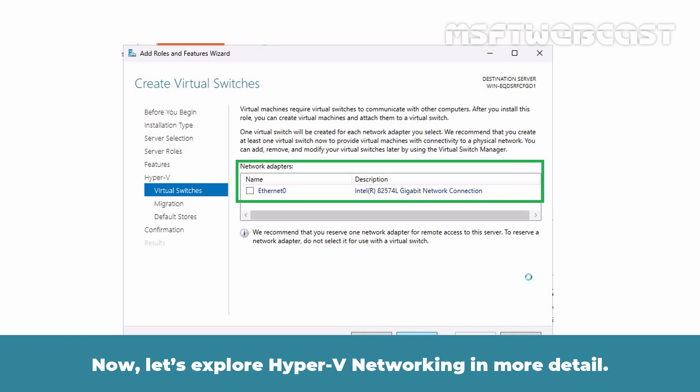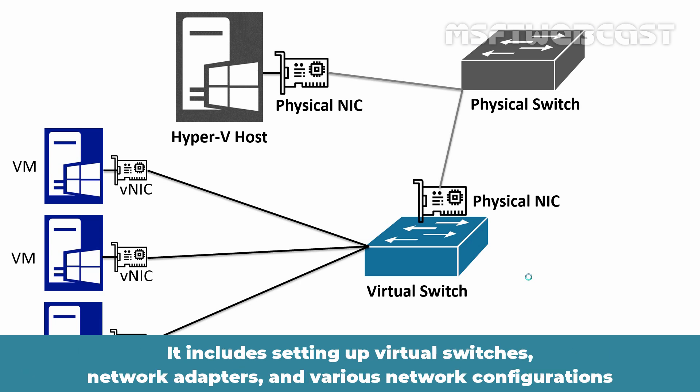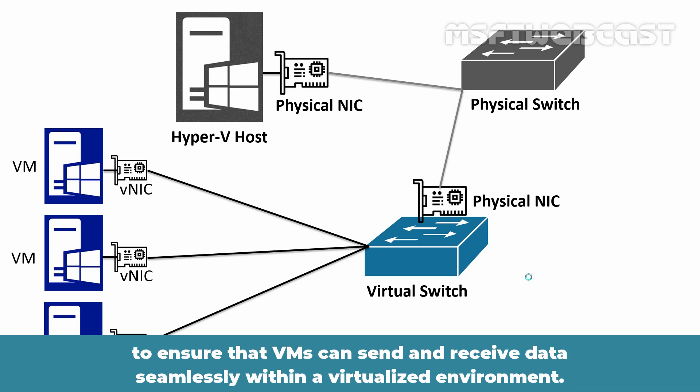Now let's explore Hyper-V networking in more detail. Hyper-V networking is a process of enabling communication between virtual machines, the Hyper-V host, and external networks. It includes setting up virtual switches, network adapters, and various network configurations to ensure that VMs can send and receive data seamlessly within a virtualized environment.